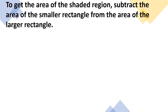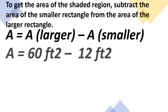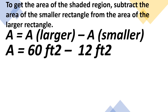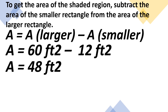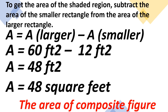To get the area of the shaded region, subtract the area of the smaller rectangle from the area of the larger rectangle. Area equals 60 square feet minus 12 square feet, so we got 48 square feet. So 48 square feet is the area of the composite figure.